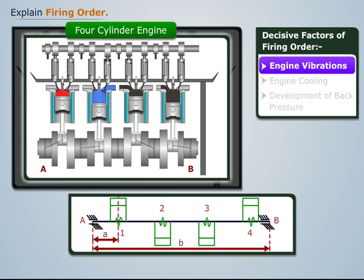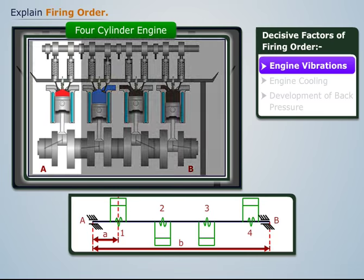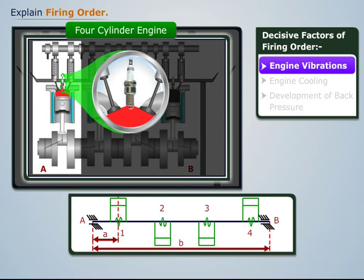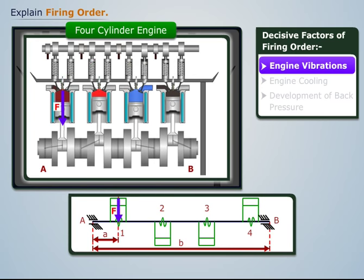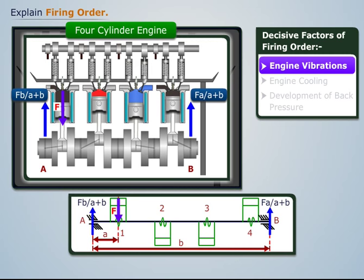Now let's try to find out the firing order of the four-cylinder engine. Let's consider that the first cylinder is fired. The force F acting downwards on this cylinder gives rise to forces in bearings A and B of magnitude F×B/(A+B) and F×A/(A+B) respectively.